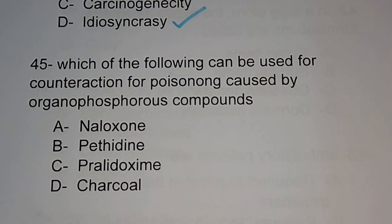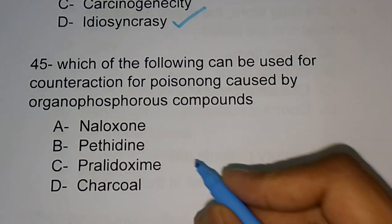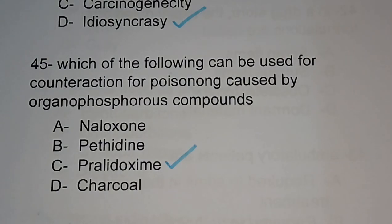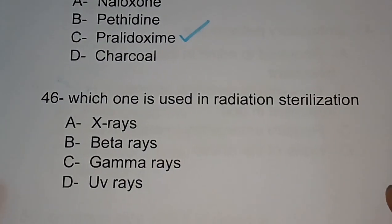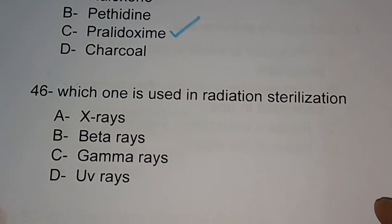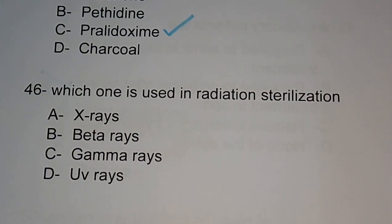Question number 45: which of the following can be used for counteraction of poisoning caused by organophosphorus compounds? Options are naloxone, pethidine, pralidoxime, charcoal. The correct answer is pralidoxime — for organophosphorus poisoning, we use pralidoxime.